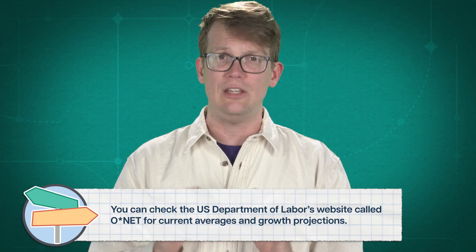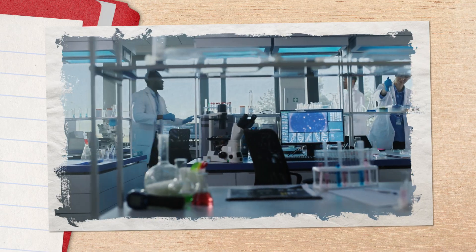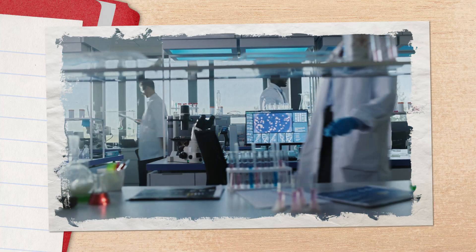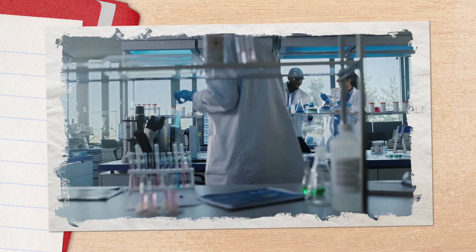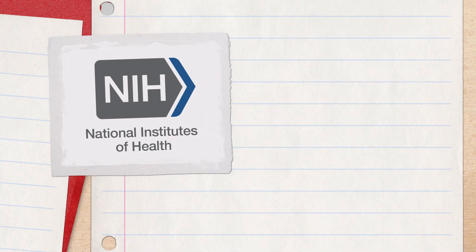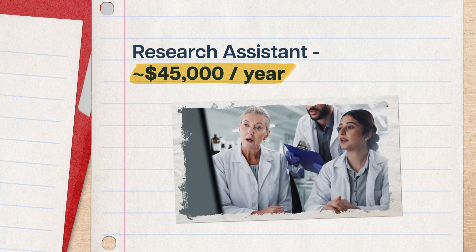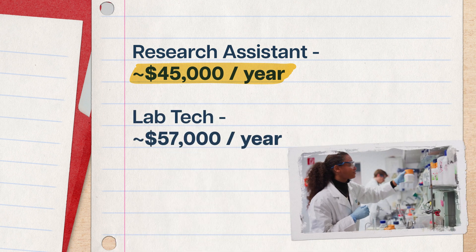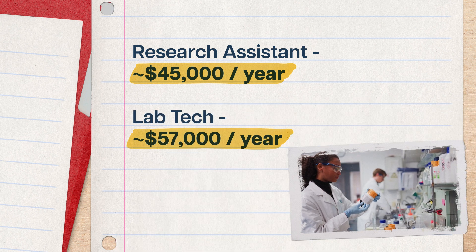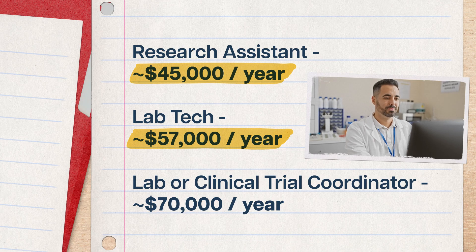Neuroscience research is a huge field that you can get into at a ton of different levels. Like right out of college, you could call on your undergrad research experience to get a job in a neuroscience lab. Those labs might be attached to universities, or private companies, or even government organizations like the NIH. You could work as a research assistant and make about $45,000 a year on average, or as a lab tech and make something like $57,000. And with a little more experience, you could become a lab or clinical trial coordinator and make more like $70,000 a year.